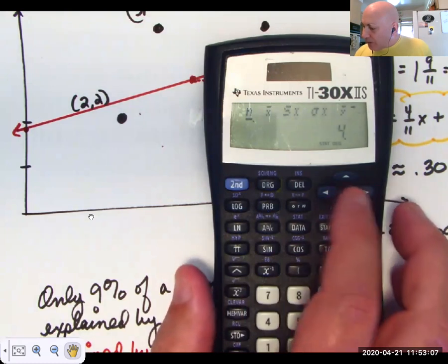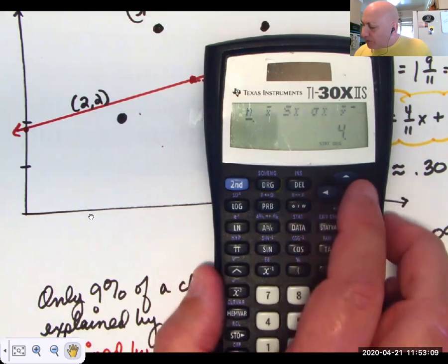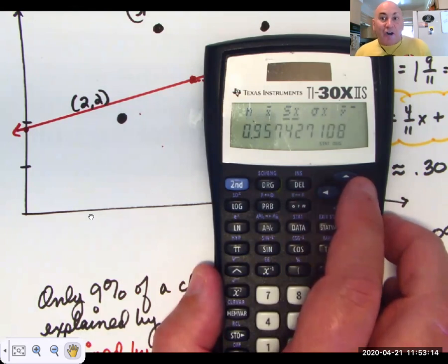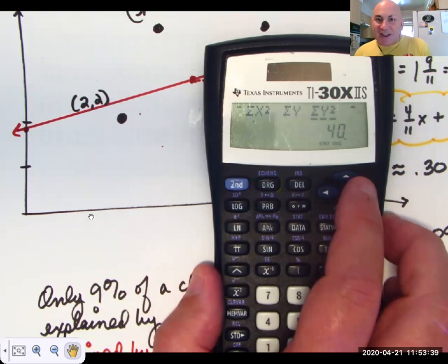Instead of scrolling to the right, actually before we do it, let's scroll to the right. If you needed, if you were calculating r on your own and you needed sigma x and sigma x squared and all those numbers, you keep scrolling. Here's the sum of the four x values. Here's the sum of the x squareds. Here's the sum of the four y values. Here's the sum of the four y squareds.